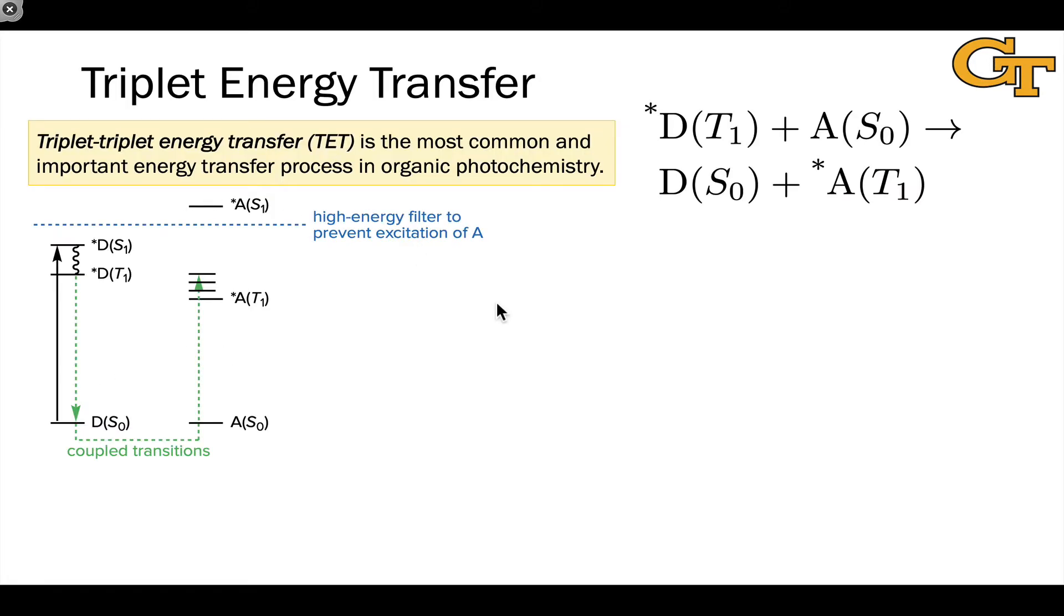Triplet energy transfer is the most common and important energy transfer process in organic photochemistry to generate those organic triplets that we can't make any other way.